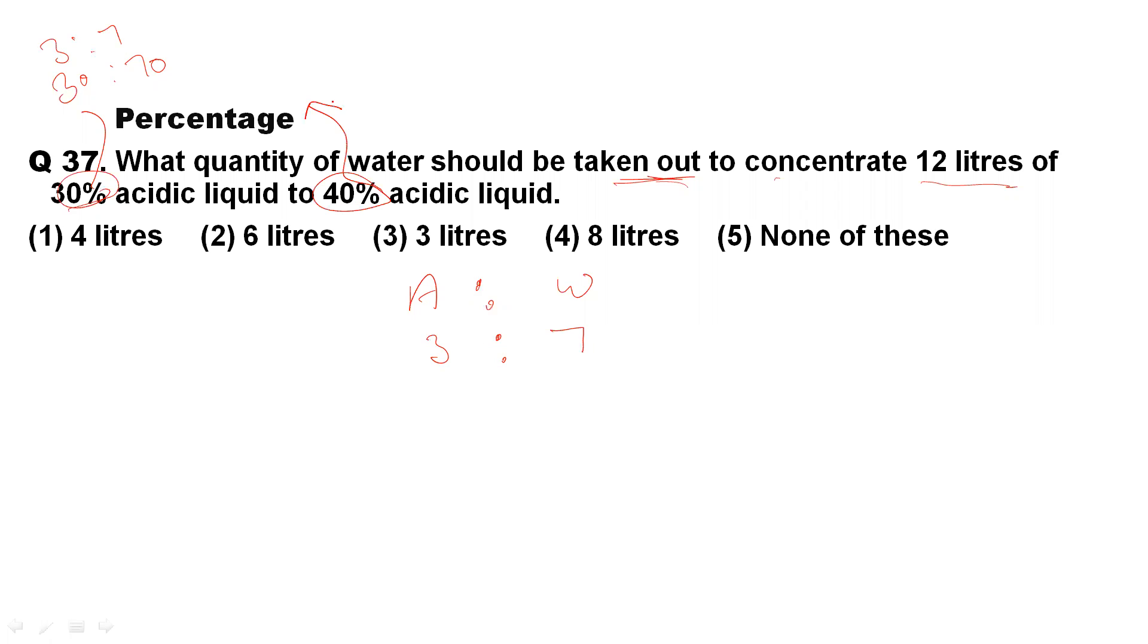Finally, they are saying it will become 40%, and 40% is the acid and the remaining part, that is 60%, is water, because we have a total 100% value in every question. Now that will become a 2:3 ratio. This is 2:3.